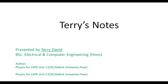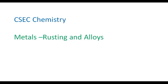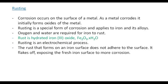Welcome to another episode of Terry's Notes and today we are going to be looking at rusting. Now what is rusting? Corrosion occurs on the surface of a metal. As a metal corrodes it initially forms oxides of the metal. Rusting is a special form of corrosion and applies to iron and its alloys. So once we use the word rusting we are referring to iron.